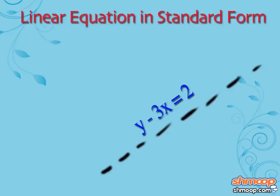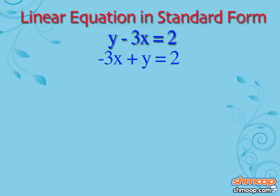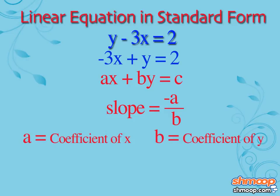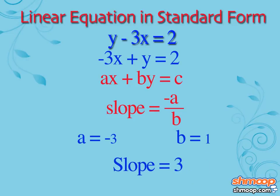The first order of business is to change that equation into standard form. All we have to do is switch the x and y — don't forget that negative sign. To find the slope from the standard form of a linear equation, we can use a special formula: the slope of a line equals negative A over B, where A is the coefficient of x and B is the coefficient of y. The coefficient is just a fancy name for the constant before a variable. Since A is minus three and B is one, the slope is negative minus three over one, or positive three.